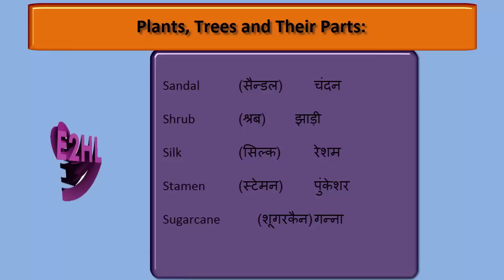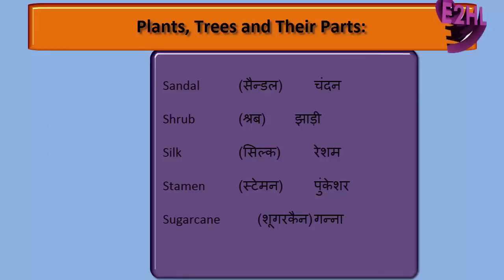Silk — Resum. Stamen — Pungkissar. Sugar Cane — Ganna.